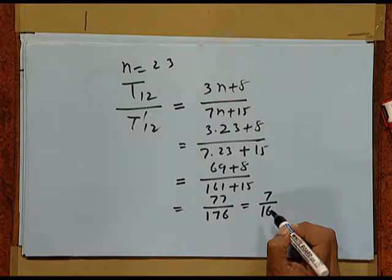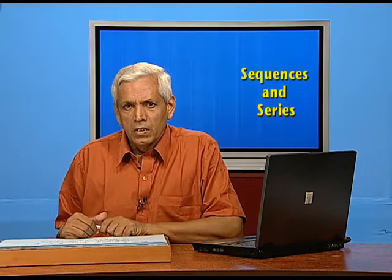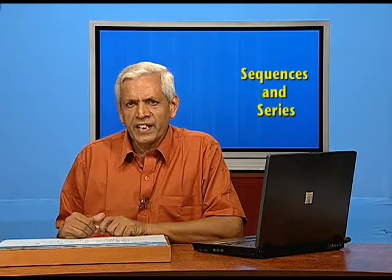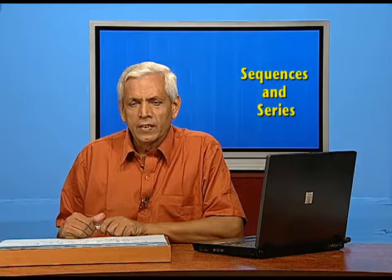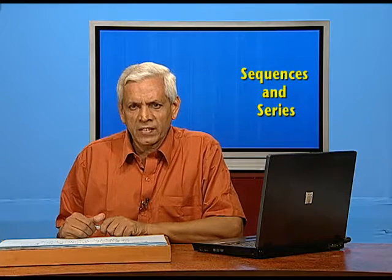This is the required answer. For the given series, the ratio of the twelfth terms of the two series will be 7 : 16. In our previous problem, you might have noticed that we did not find a and d at all. Similarly, our next problem also involves a similar approach.